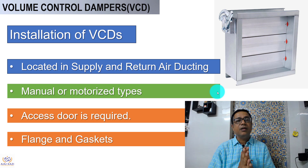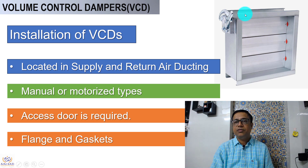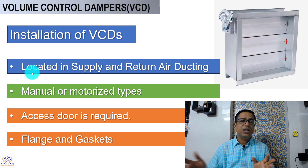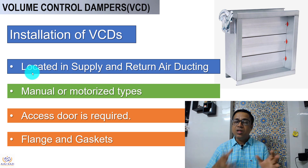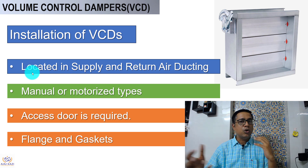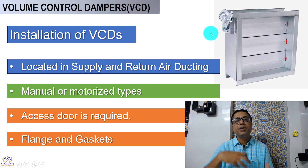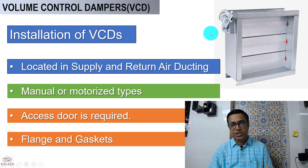Now let us look at the installation of VCDs. This is a VCD — you can see the handle, and this is a multiple blade damper. Generally, VCDs are located in supply or return air ducting. VCDs come in two types: manual, like this one, and motorized.